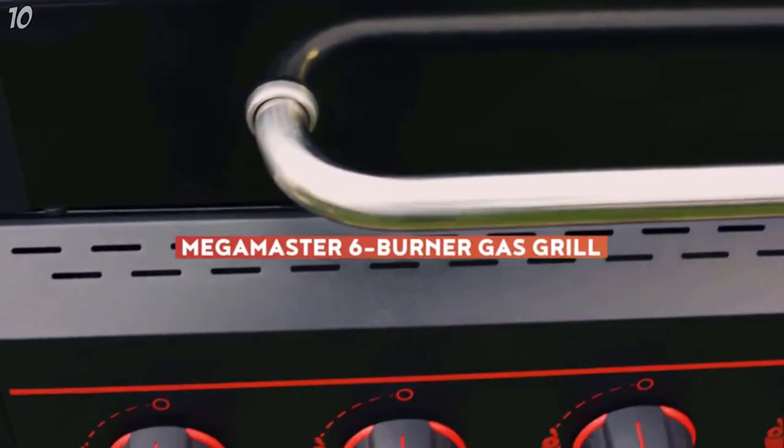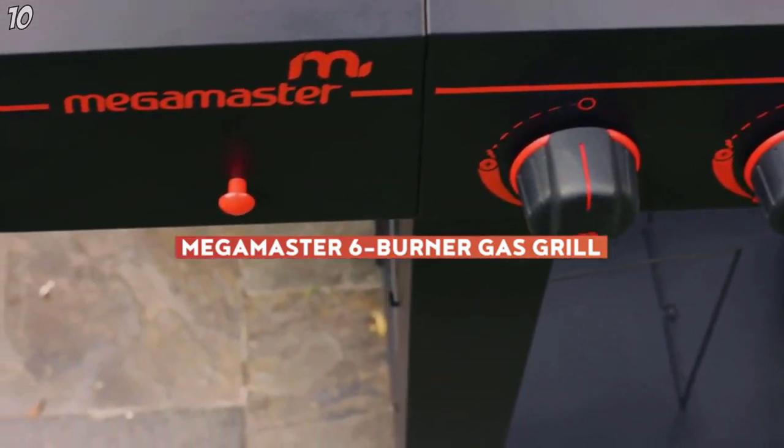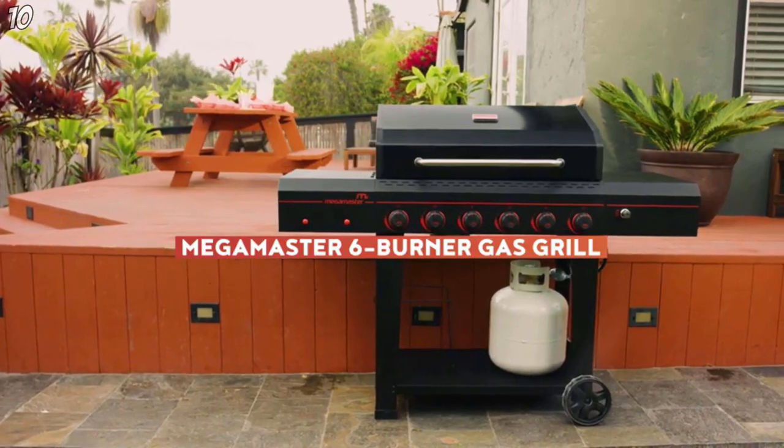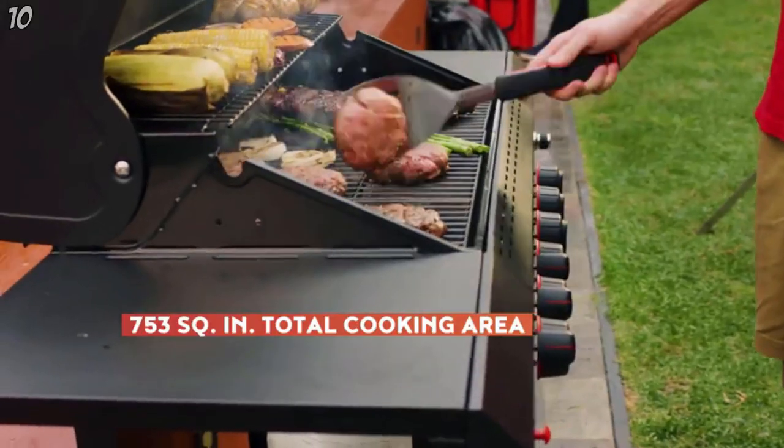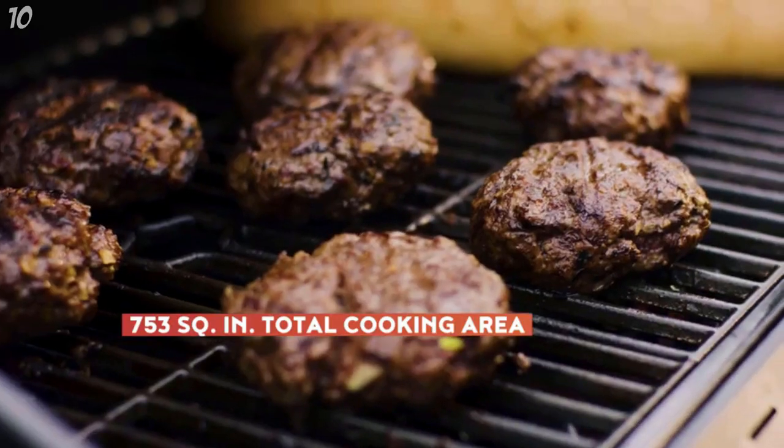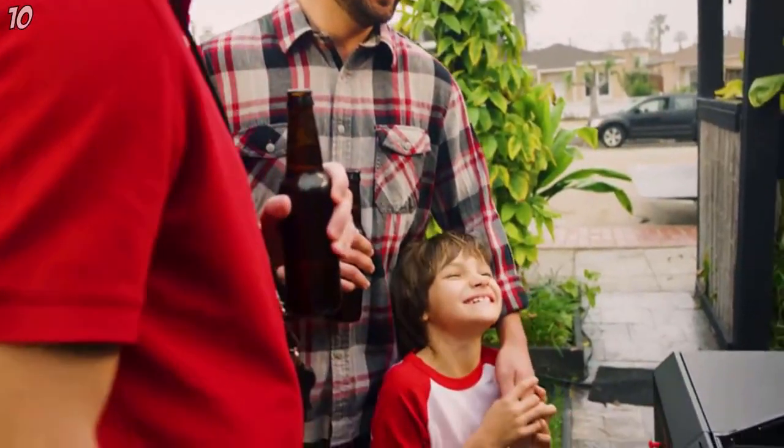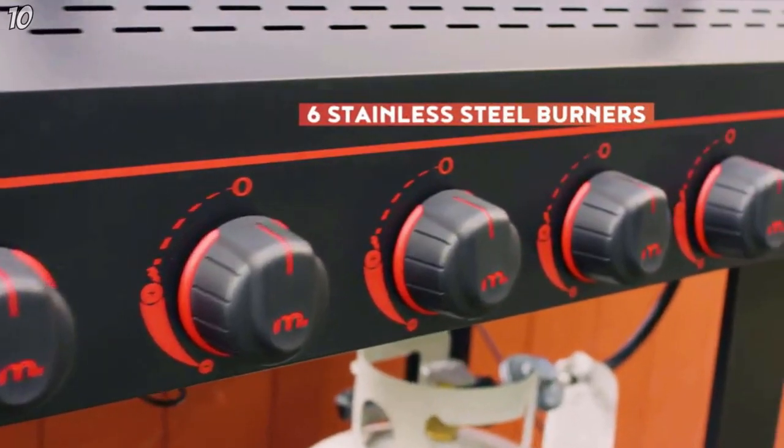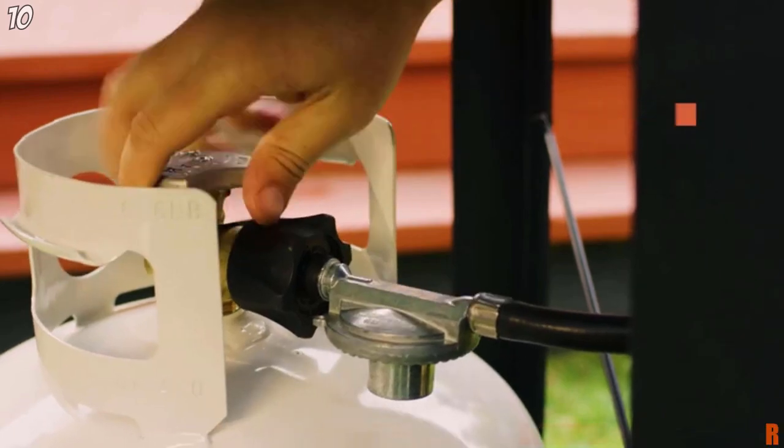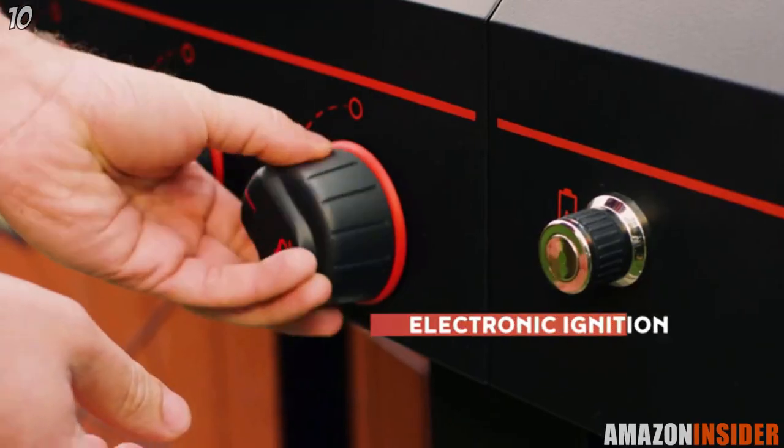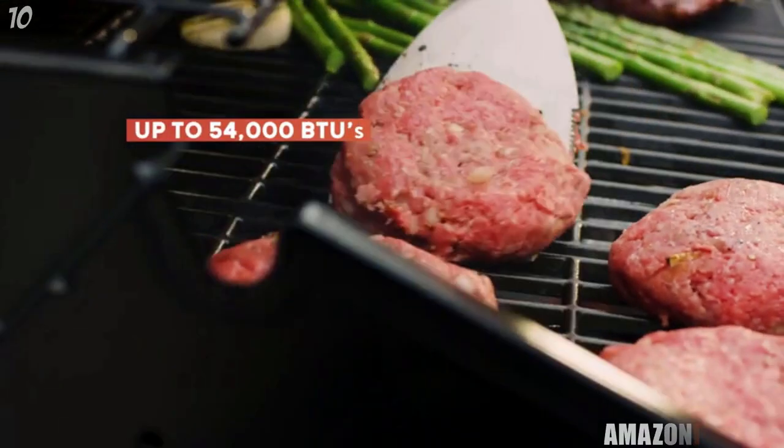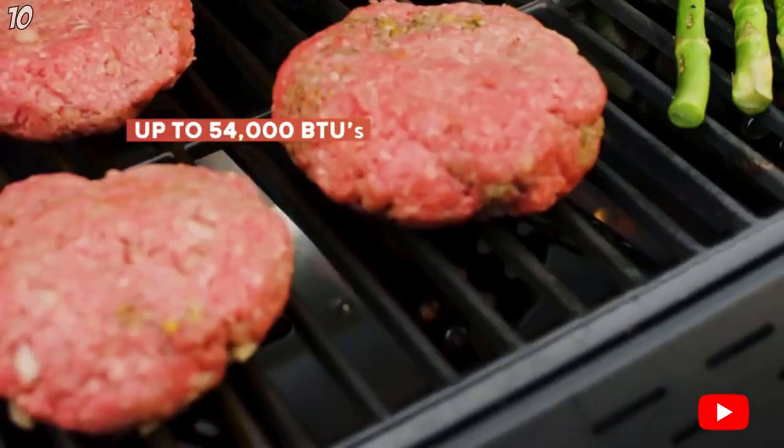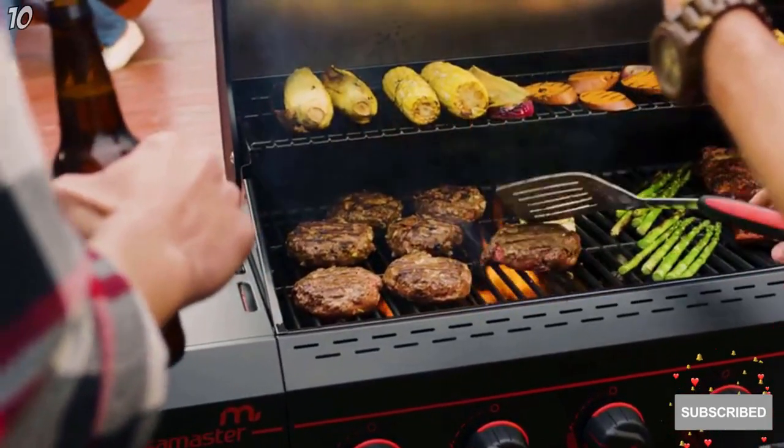Meet the MegaMaster 6 Burner Grill. The large and in-charge gas grill designed to master any outdoor feast. With 753 square inches of total cooking area, you'll have enough room to feed even the fiercest appetites. To fire up the grill's six stainless steel burners, simply turn on the gas, twist the burner knobs, and push the electronic ignition button.